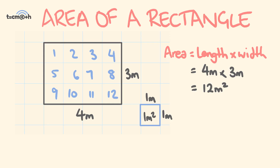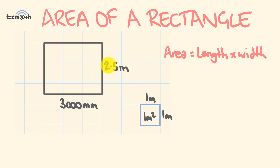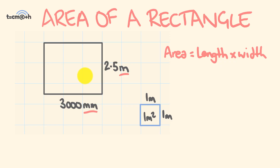One thing to watch out for: in this next example, we're working out the area of a rectangle with a length of three thousand millimeters and a width of two point five meters. The problem is our units don't match — one dimension is in meters and the other is in millimeters. When working out area, you must use the same units. Since we want meters, we convert: there are one thousand millimeters in one meter, so three thousand millimeters divided by one thousand equals three meters.